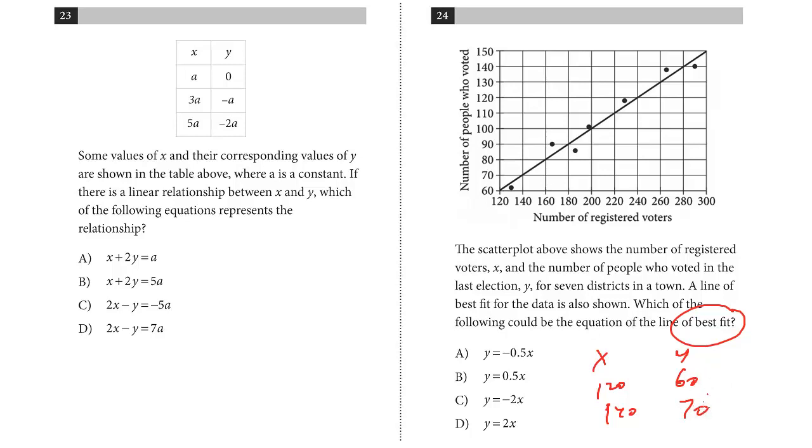So Y2 minus Y1 over X2 minus X1, we did a problem like this in the last video. So 70 minus 60, that's going to be 10. 140 minus 120 is 20, so it's just 0.5, and it's upward, obviously it's going up, and so the answer here is B.